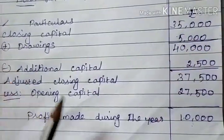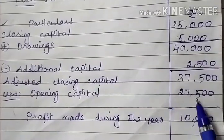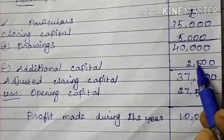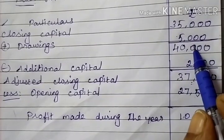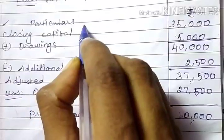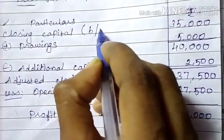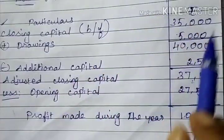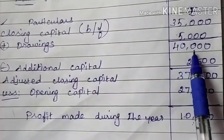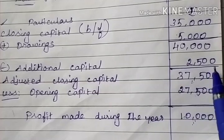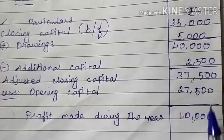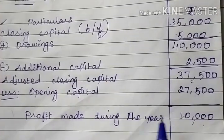Once again to verify: 10,000 plus 27,500 equals 37,500. Then 37,500 plus 2,500 equals 40,000. Then 40,000 minus 5,000 equals 35,000. So closing capital — the missing information — is 35,000. Checking: 35,000 plus 5,000 equals 40,000, minus 2,500 equals 37,500, minus 27,500 equals 10,000. This is method number 4.